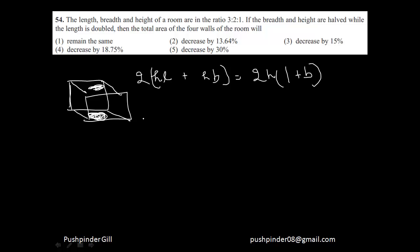Now the length, breadth and height are in the ratio 3:2:1. So since he is asking me percentages, I can very well assume the length to be 3, the breadth to be 2, and the height to be 1. So what is the area of the walls? That is 2 times height into (length plus breadth), that is going to be 10.